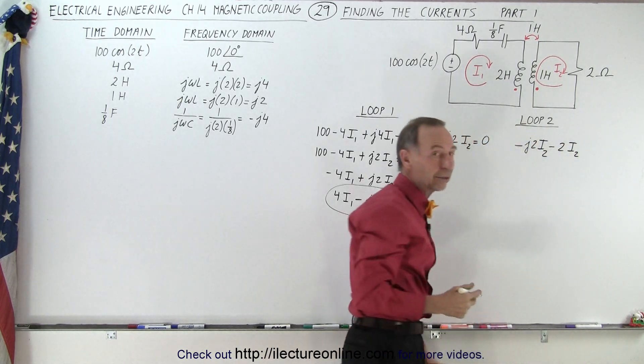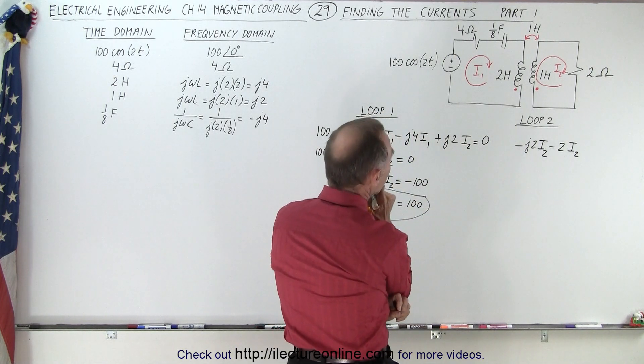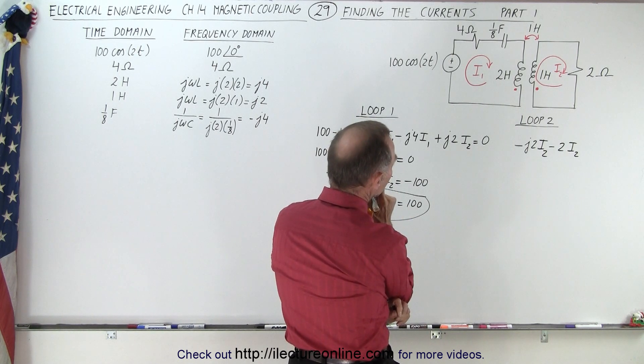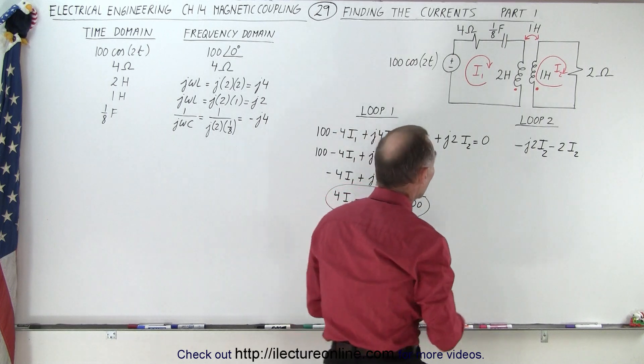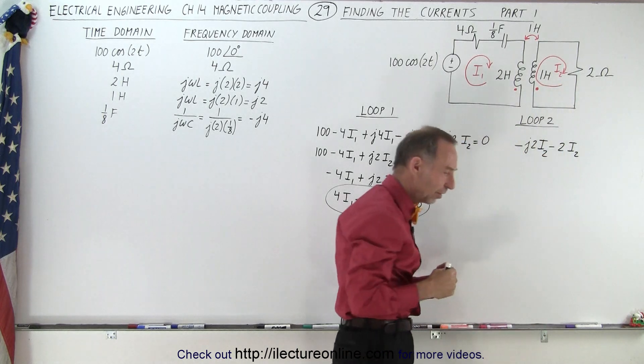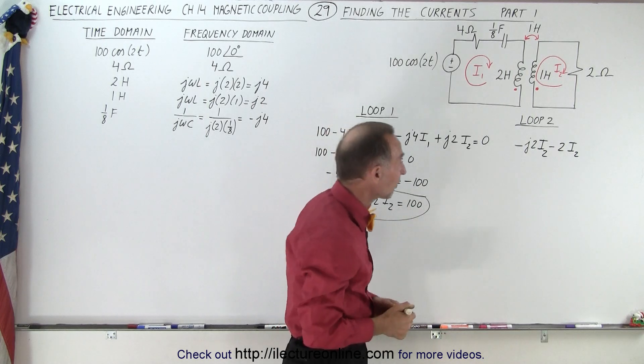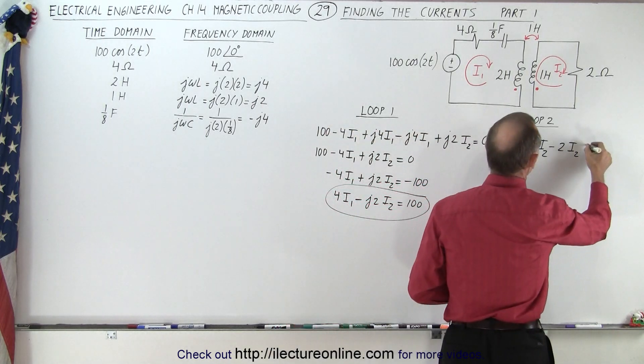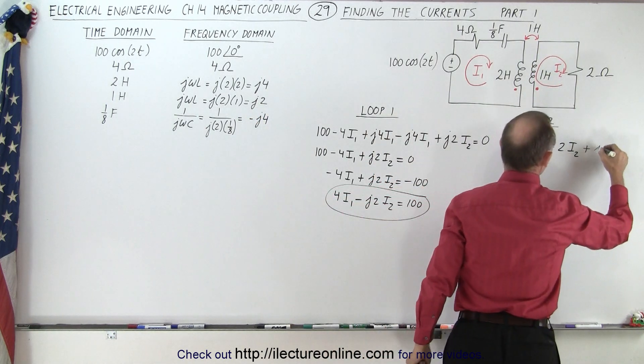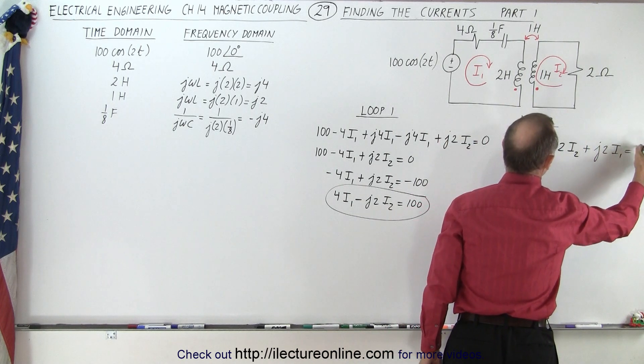And then we have to worry about the cross, the mutual magnetic coupling. Notice again, that on one side the current enters the non-dot side, on the right side enters the dot side, so it's opposite sides. So instead of a voltage drop, we now end up with the voltage rise. It goes 180 degree phase difference, so that becomes a plus. It's a mutual inductance of one Henry, which is a plus J2. And it's the current in the other circuit that's causing it times I1 equals zero.